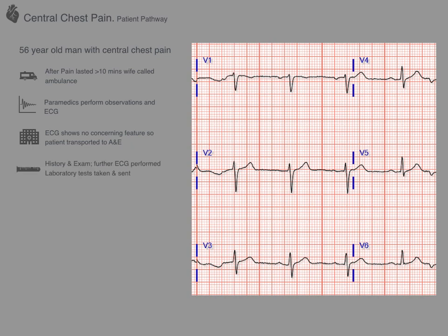In ED, the patient is seen by a doctor — history taken, examination performed, further ECGs done, laboratory tests taken, and basic observations recorded. The patient's examination is unremarkable. Two hours later, their blood results — their cardiac enzymes, specifically troponin — come back raised, with a value of 679, which is a very significantly positive result.